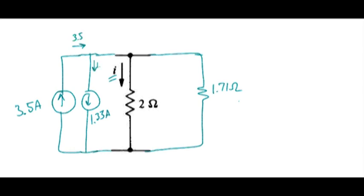That didn't quite come out right. We lose 1.33 amps in that direction, so we've got a total of 2.17 amps right there. So I can write one single source with that value.